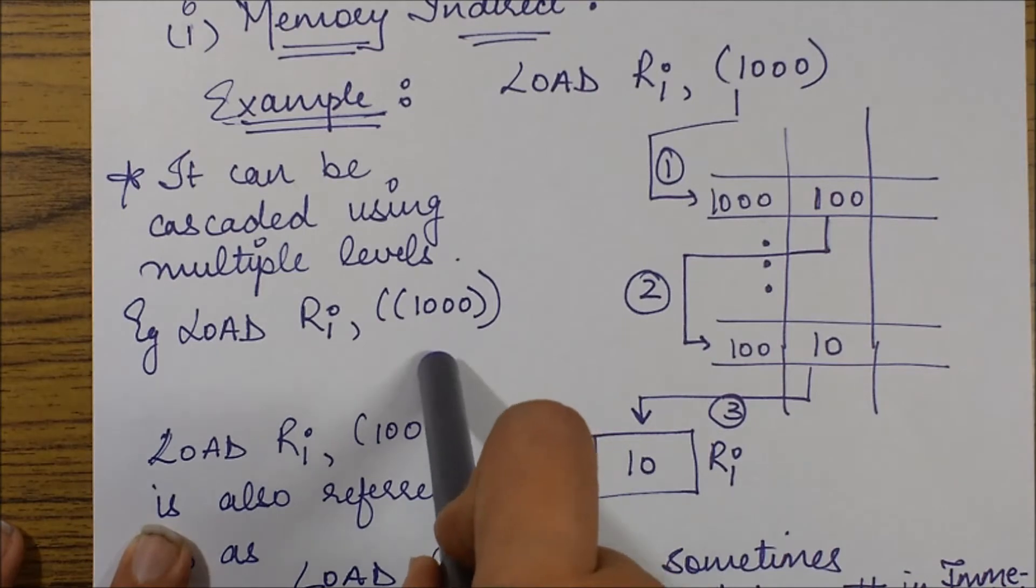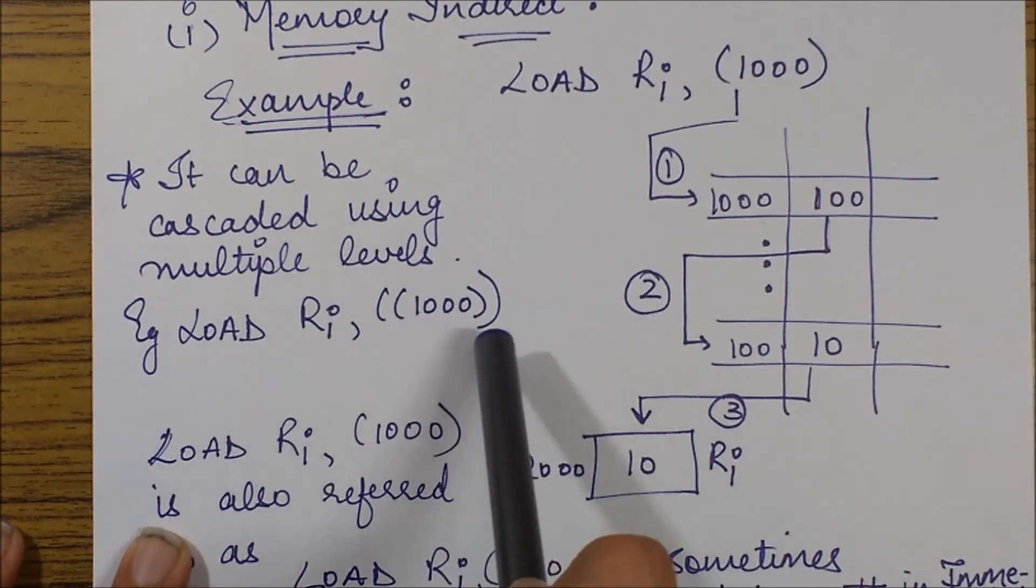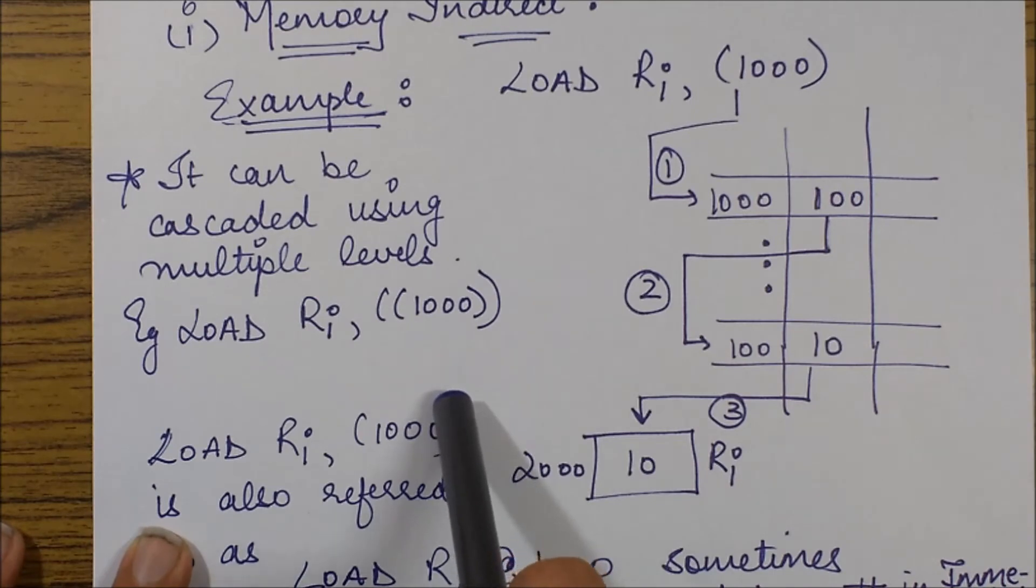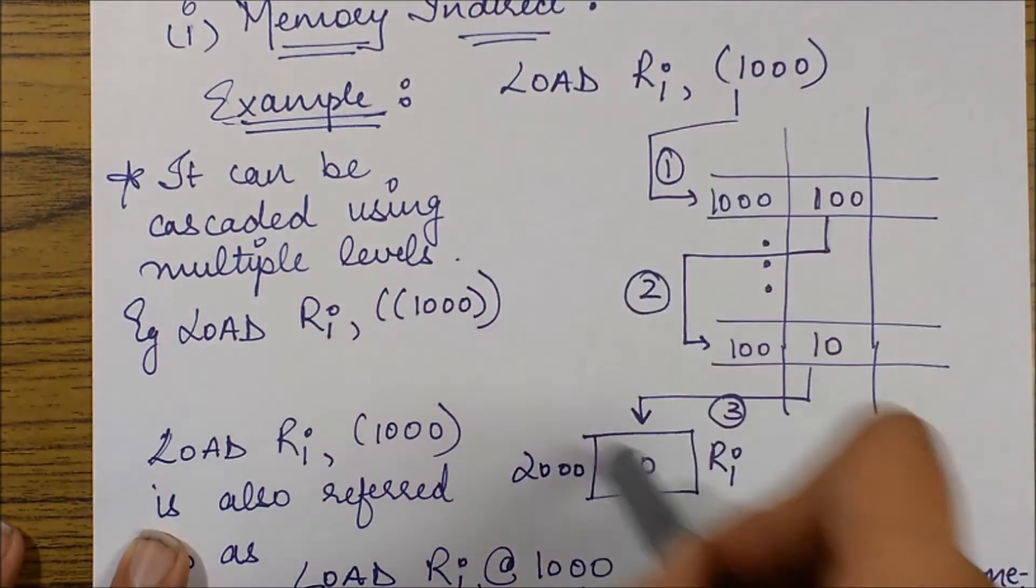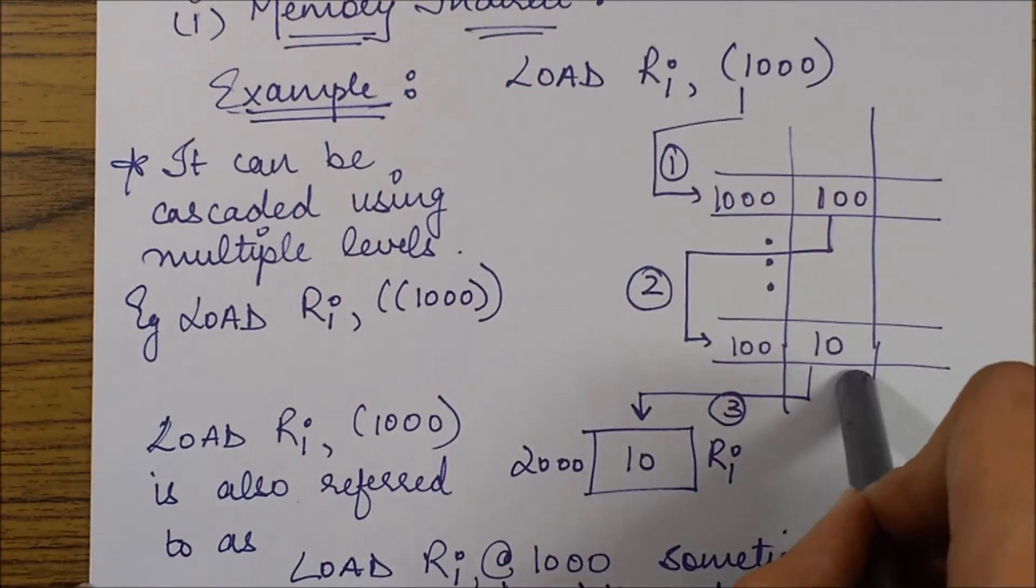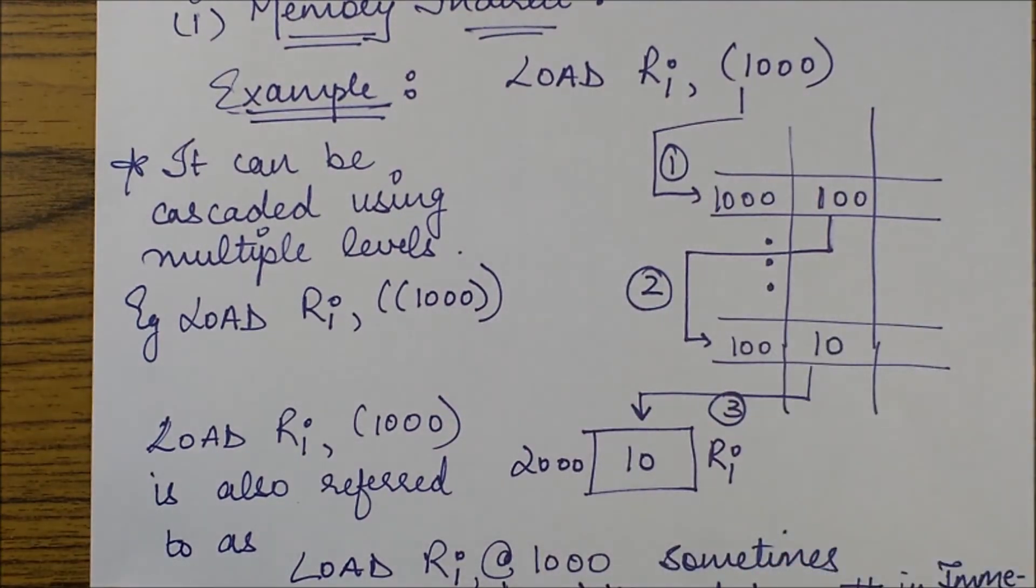So this is a double indirect operation. So in this case, 1000 would contain an address, which would again contain an address, which would again contain an address, which will be the address of my operand. So you can easily visualize it if you practice it in the same manner as I did over here. So that would be a good practice question for you.